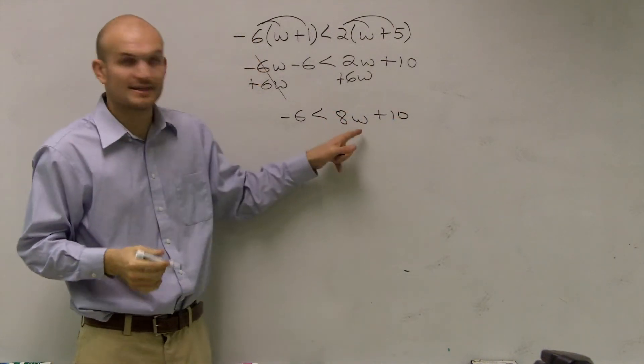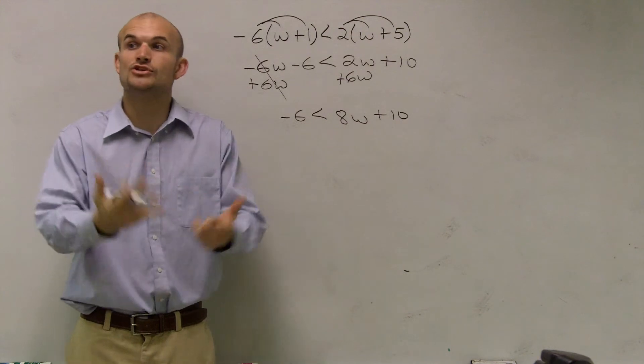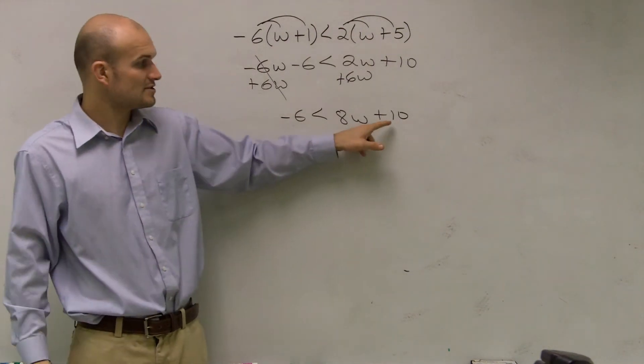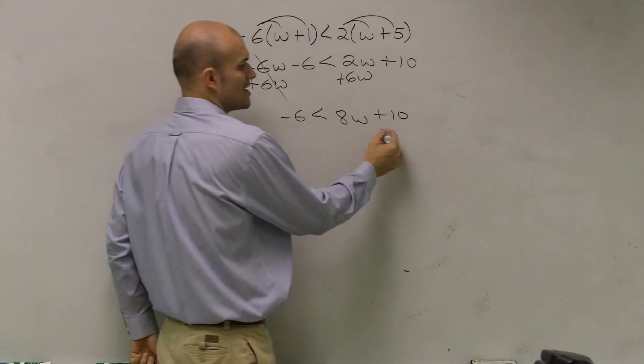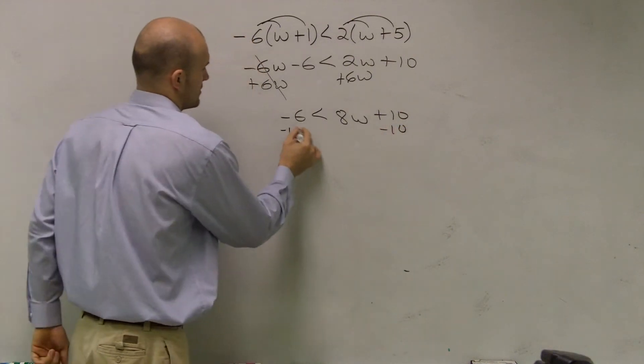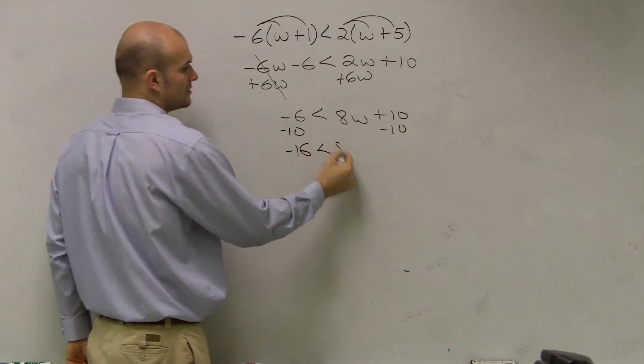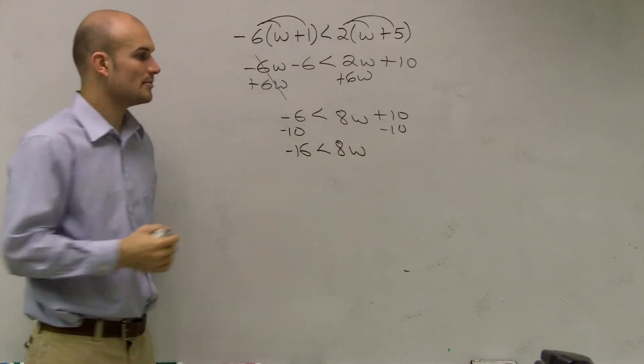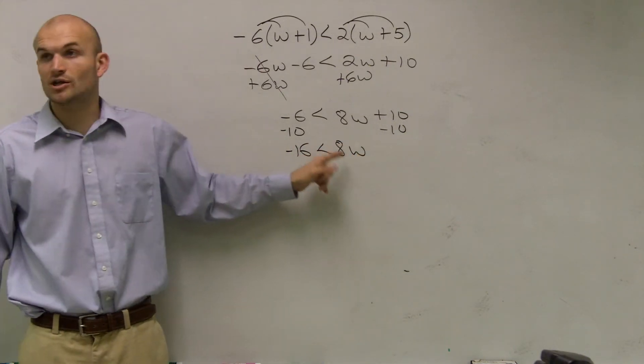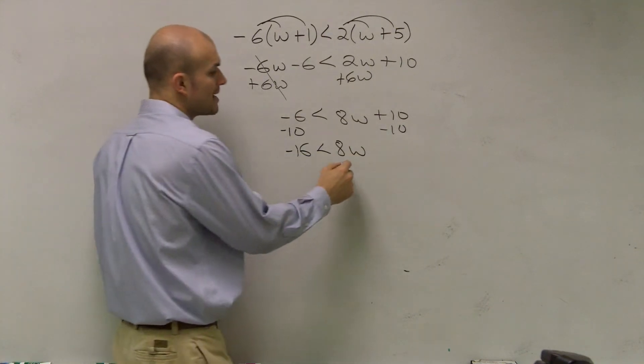Now remember, I need to get this w by itself. So I need to undo what's happening to the w. Well, first of all, my w is being added by 10. So I subtract 10 on both sides. So negative 6 minus 10 is negative 16 less than 8w. Now, to get rid of multiplication of 8, I need to divide by 8.